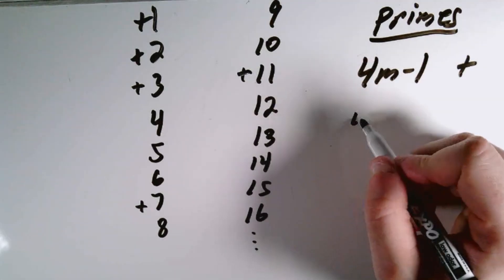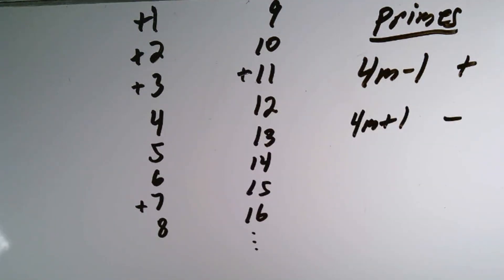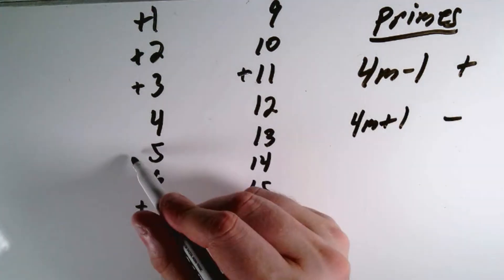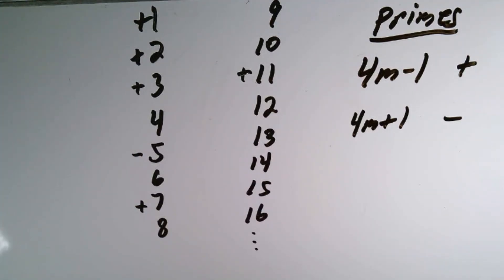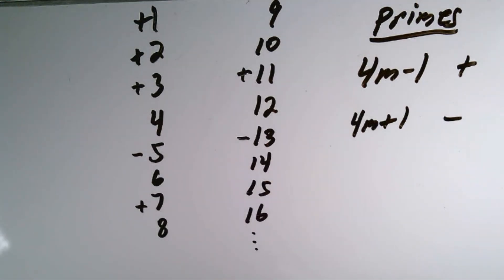Then any primes of the form 4m plus 1 will be negative. So if we plug in 1 for m, we get 5, which is negative. If we plug in 2 for m, we get 9, which is not prime, so we don't touch that. But 3 for m, we get 13, which is negative. 17 will also be negative, and you just keep going.